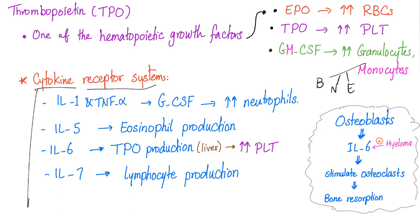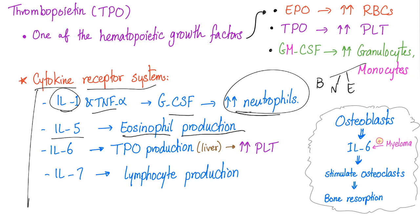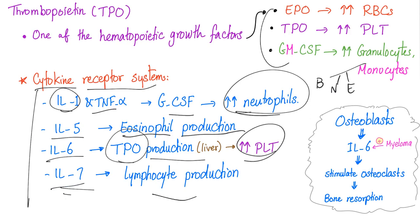Cytokine receptor systems include interleukin-1 and TNF-alpha, which stimulate G-CSF to increase granulocytes including neutrophils. Interleukin-5 promotes eosinophil production. Interleukin-6 helps in T-Po production, leading to increased platelets. Interleukin-7 helps increase lymphocyte production — that's the factor that helps those lymphocytes.